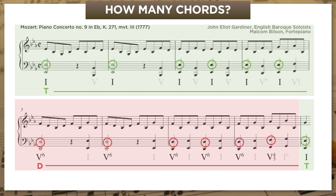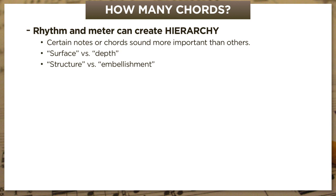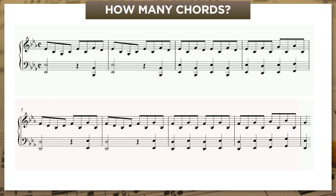So let's recap. Rhythm and meter can create hierarchy — which is to say, the sense that certain notes or chords sound more important than others. Theorists often describe this distinction in terms of surface versus depth, or structure versus embellishment. And as a result of this hierarchy, we can sometimes hear different levels of harmonic motion — quick chord changes at the surface, and slower motions underneath. It also lets us hear different levels of melodic activity.